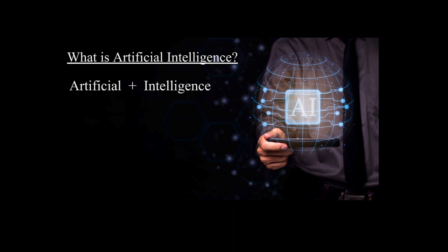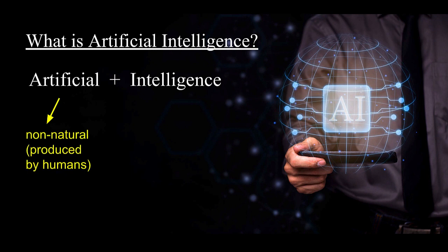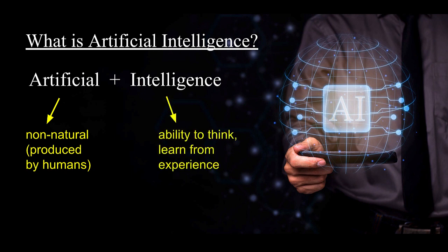Let's split this word and understand the meaning of each word. Artificial means something that is non-natural, that is produced by humans, and intelligence means the ability to think and learn from experience. So if we combine these together, artificial intelligence is something that is not natural and can think and learn from experience.